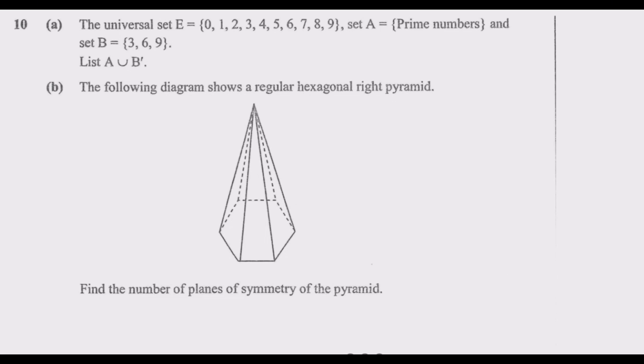Let us look at question 10. Question 10(a): the universal set E contains elements 0, 1, 2, 3, 4, 5, 6, 7, 8, 9. Set A contains prime numbers and set B is the set {3, 6, 9}. List A union B complement.